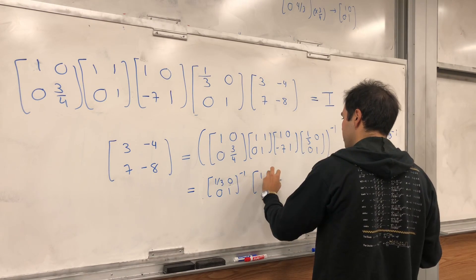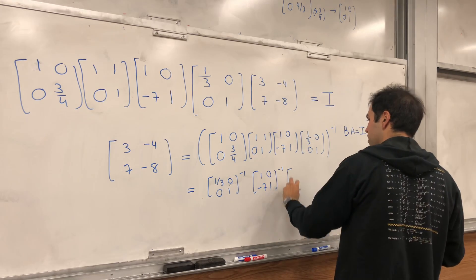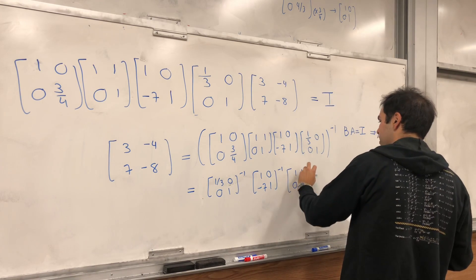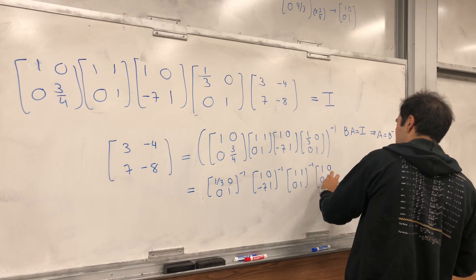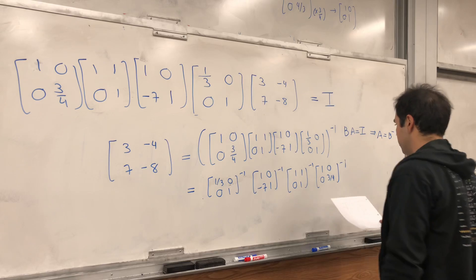Times, 1, 0, minus 7, 1. Inverse. Times, 1, 1, 0, 1. Inverse. And, 1, 0, 0, 3 quarters. Inverse.